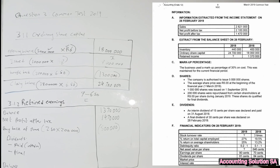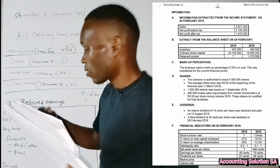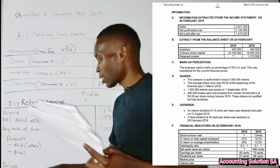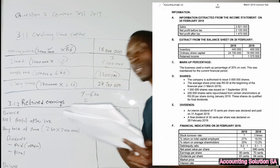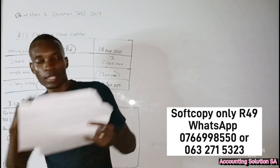Now let's proceed to dividends. We have interim dividends paid during the year and final dividends declared at the end of the year, and we add them together. Number (e): an interim dividend of 15 cents per share was declared and paid on 31 August 2018.